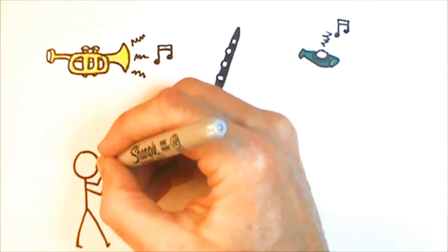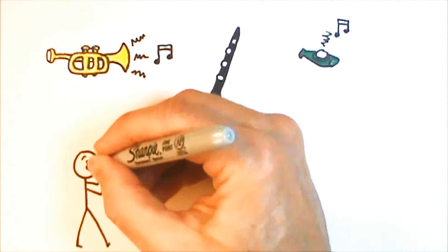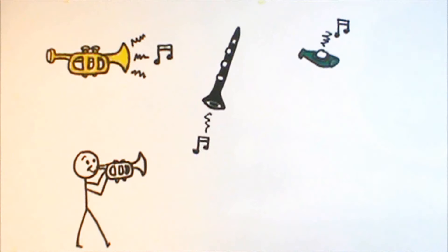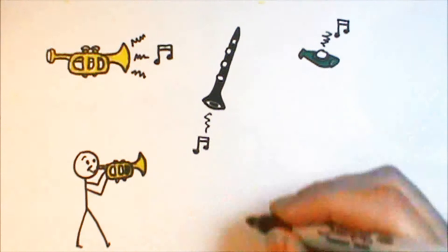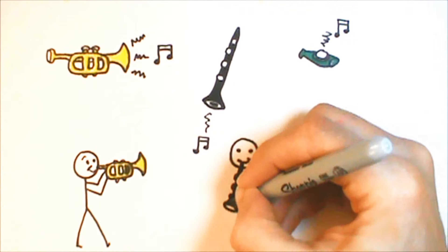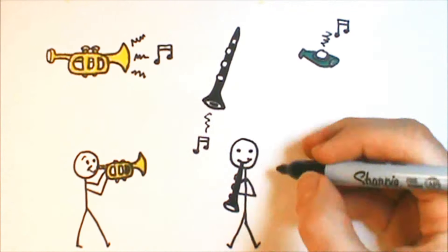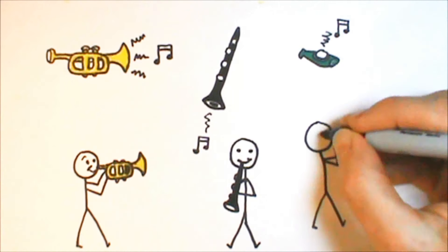She could play the exact same song on all three instruments, the very same notes. And no matter how good she is, the clarinet won't ever sound like a trumpet, and the kazoo will never sound like a clarinet. If the musician is God, and her breath is God's Spirit, and if the different instruments are the different authors who actually wrote the Bible, this is a useful way of thinking about inspiration.